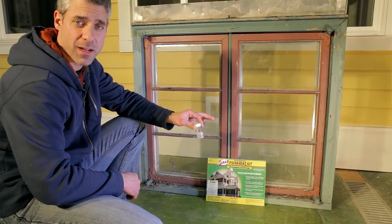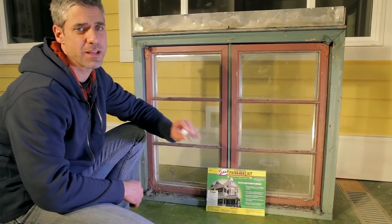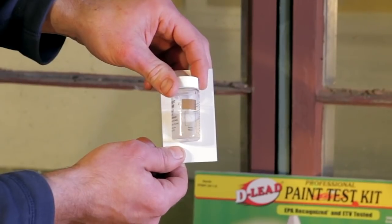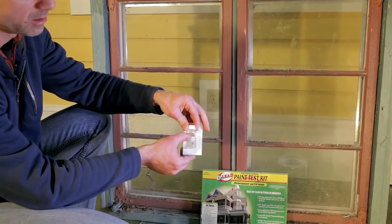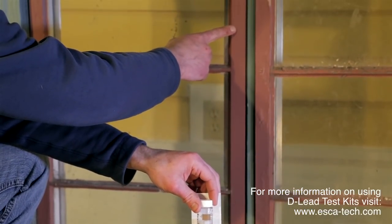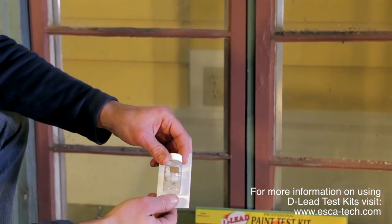We've waited our 10 minutes. We're going to shake this again for another 10 seconds, and against a white background. Clearly our solution is much lighter than the test standard, which tells us that this red paint we tested is not a leaded paint.